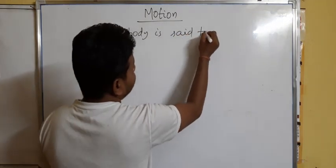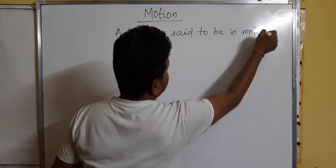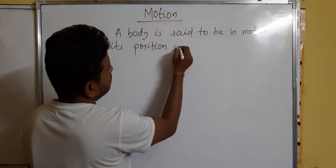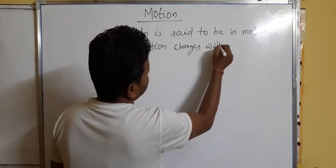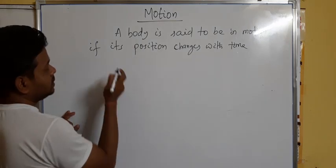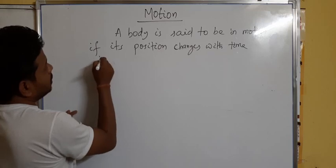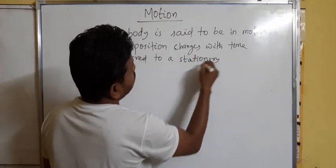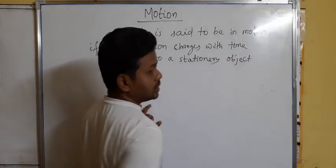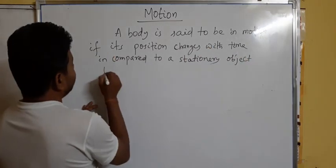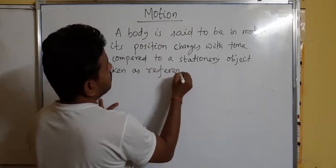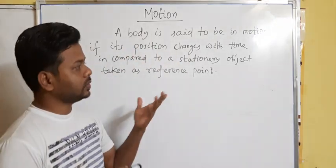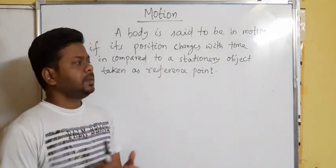A body is said to be in motion — it is a moving object — if its position changes with time, compared to a stationary object taken as a reference point. The tree outside is taken as the reference point. Only then can you say the object is moving. This is the concept of motion.